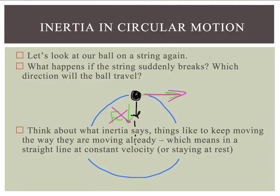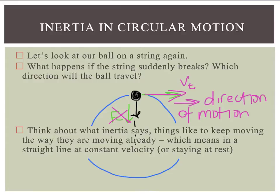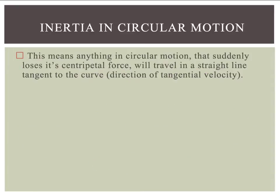So this tangent velocity is the direction the ball will move — that is now the direction of motion when the string breaks. This means anything in circular motion that suddenly loses its centripetal force will travel in a straight line tangent to the curve, which is the direction of the tangential velocity.